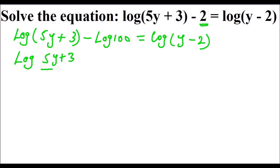So this is the logarithm of (5y + 3) divided by 100 equals the logarithm of y - 2. We can get the anti-logarithm for both sides, which is the same as canceling that logarithm, so we have (5y + 3) over 100 equals y - 2.